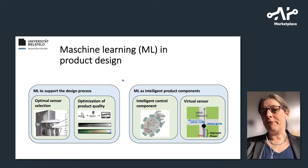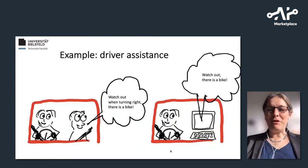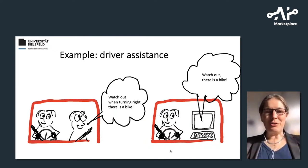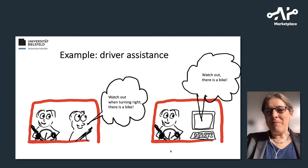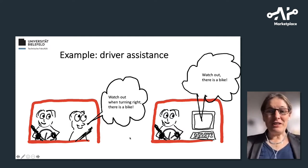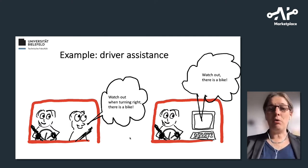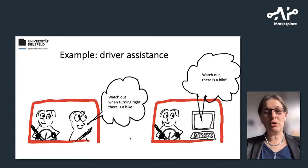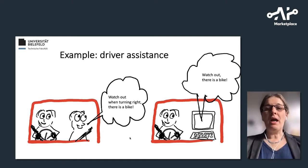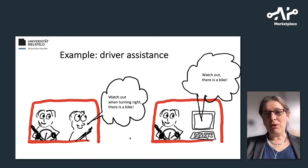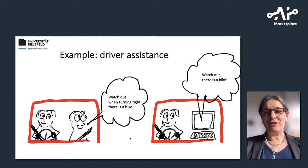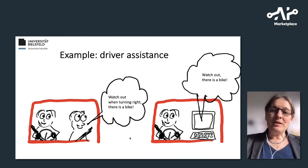Let me give you an example from a virtual sensor — driver assistance systems. Instead of a fellow driver who could warn you when you want to turn right and there's a bike, you might have an AI component warning you not to turn right because there's a bike. To do that, you need two parts: you need to detect the intention of the driver to turn right, and you need to detect the bike.